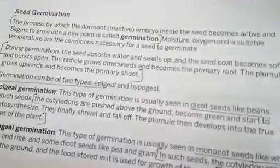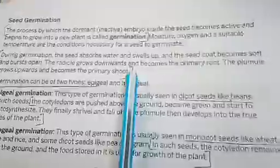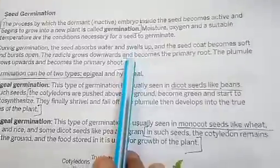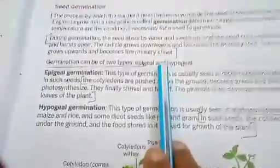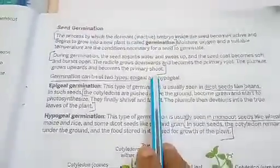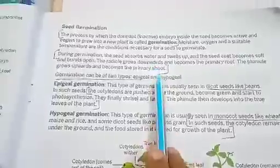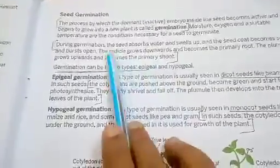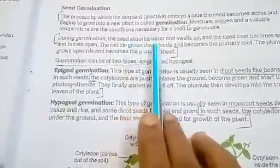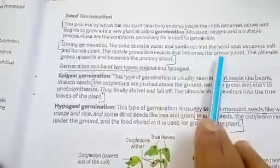During germination, the seed absorbs water. You might have seen your mother germinating gram seeds at home — she soaks them in water. The water is absorbed and from the bottom a whitish structure comes out, which is called the radicle. This is how germination takes place.